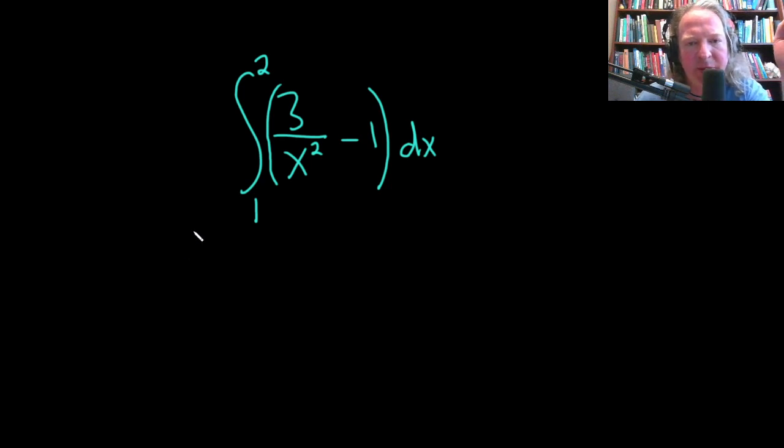In this example, we're going to find the definite integral of 3 over x squared minus 1 from 1 to 2. So the first thing we have to do is write this in a way that allows us to integrate it.